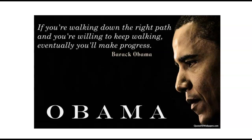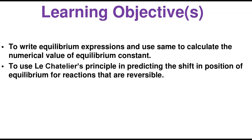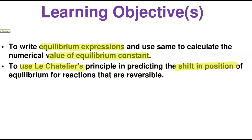Our learning objectives in this class include the following: number one, we will write equilibrium expressions and use them to calculate the numerical value of the equilibrium constant. Then we're going to use what we call Le Chatelier's principle in predicting the shift in equilibrium for reactions that are reversible. Those are the two main objectives we're going to be covering in this lecture.